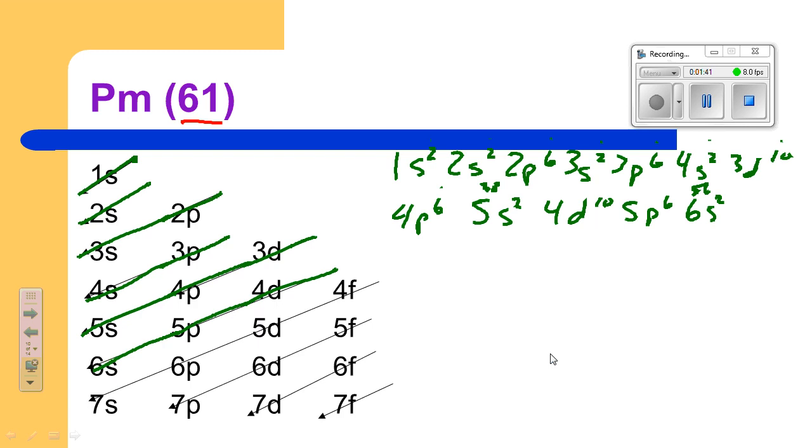Alright, then something odd happens. The diagonal rule says we should go through 4f next. However, for some reason, the ones that have 4f actually go down and they put one 5d electron in first. So yeah, I know I didn't follow the diagonal rule, but we're going to put one electron in 5d, which is going to take me to 57.